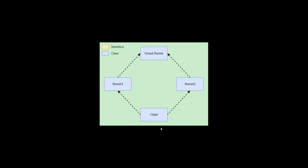So this ambiguity is called the diamond problem. And if you look at the shape of this diagram, you can see it's quite like a diamond — that's the reason why it got the name diamond problem.